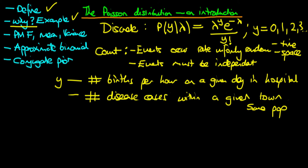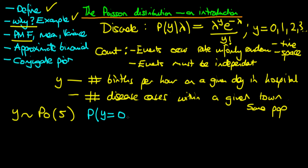We can use the PMF to answer questions. For example, suppose y is modelled by a Poisson distribution with a mean of five disease cases per year. How do we work out the probability that the number of disease cases in a given town equals zero within a particular year? Here lambda — which measures the rate, or mean number of disease cases — is five.